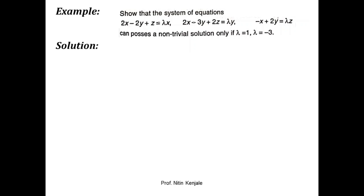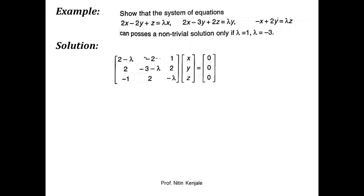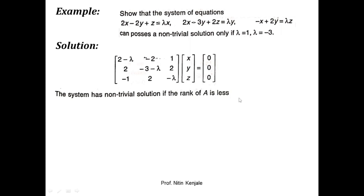In the next example, we have to show that the system of equations can possess a non-trivial solution only if lambda equals 1 or lambda equals -3. First, we write the matrix form Ax = 0. A system possesses a non-trivial solution only if the rank of matrix A is less than the number of unknowns. Here, the number of unknowns is 3, so rank of A must be less than 3. If rank of A is 2, then in its row echelon form one row must be zero, meaning the determinant of A equals zero.